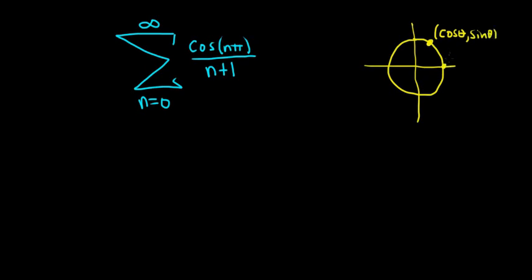This point here is 1, 0, this point here is 0, 1, this point here is negative 1, 0, and this point here is 0, negative 1. The angles here are 0, pi over 2, pi, 3 pi over 2, and then likewise over here it's 2 pi.